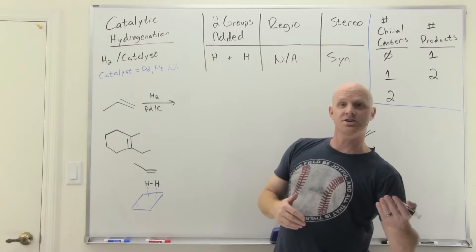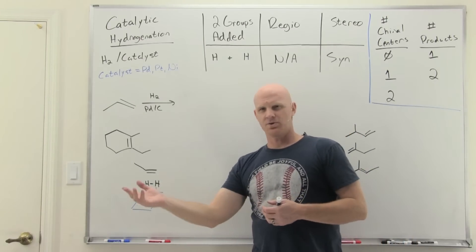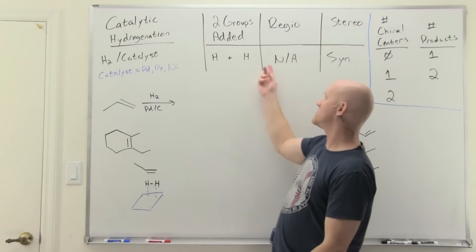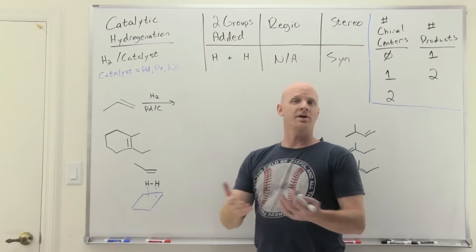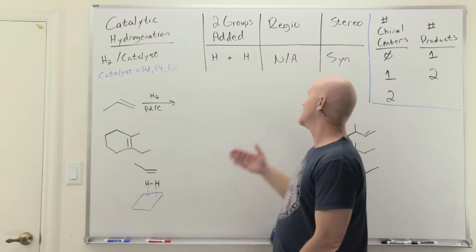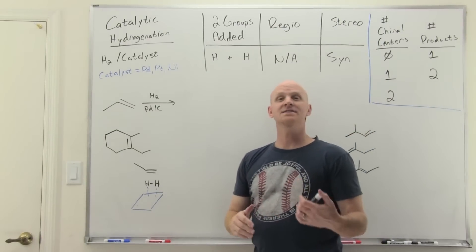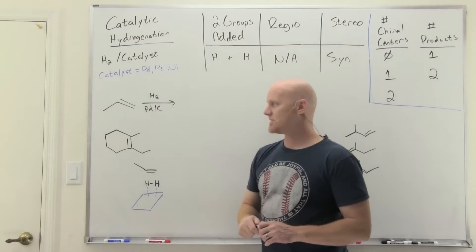It's not like which side gets the H and which side gets the H—like when we added HBr. But if you're adding two of the same thing, then there is no regioselectivity, no Markovnikov, no anti-Markovnikov to talk about. However, there is stereoselectivity here, and it is a syn addition, as we'll see.